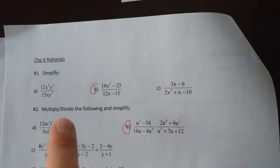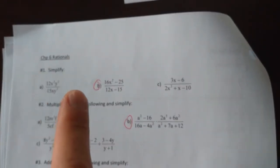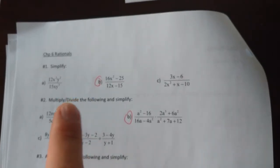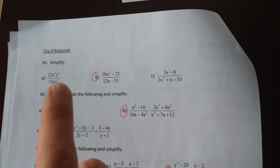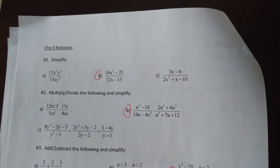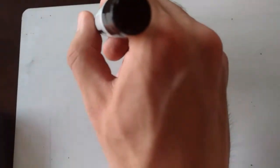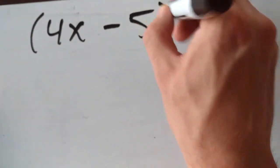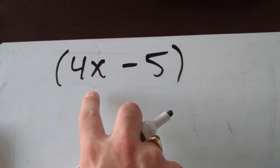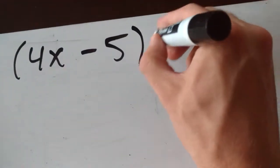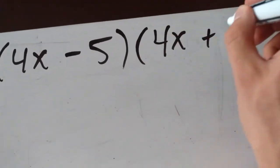The top of this fraction, we have 16x squared minus 25. That's a difference of squares. You can take the square root of 16x squared, which is 4x, and the square root of 25, which is 5. So whenever you have a subtraction of two squares, you can factor this quite easily. So 16x squared minus 25 factors to 4x minus 5 times its conjugate, which is 4x plus 5.